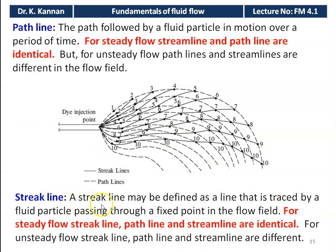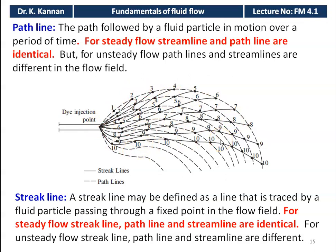The streak line is the line traced by fluid particles passing through a fixed point in the flow field. In the diagram, the continuous lines connecting particles at positions 1, 2, 3, 4, and 5 are streak lines. For steady flow conditions, streamline, path line, and streak line are all identical. For unsteady flow conditions, all three lines are different.